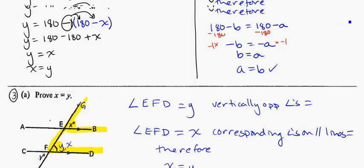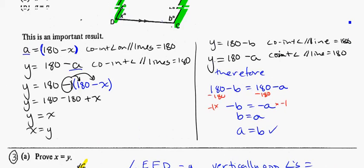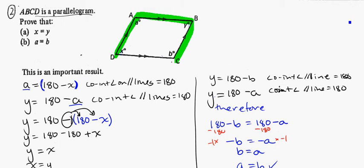Just to remind you of that, that was this one we did here. Inside this parallelogram, we proved that a and b were equal and that x and y were equal. So opposite angles inside of the parallelogram are equal.